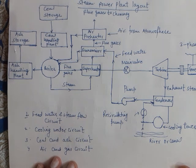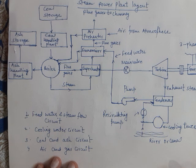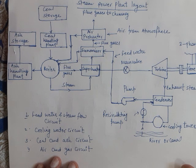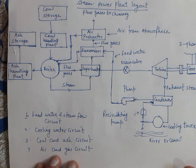In this lecture we will understand different types of power plants. The first is the steam power plant layout. In a steam power plant, steam is utilized for the production of electricity. A steam power plant is also known as a thermal power plant.